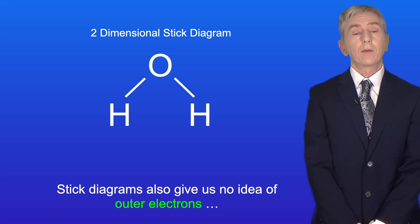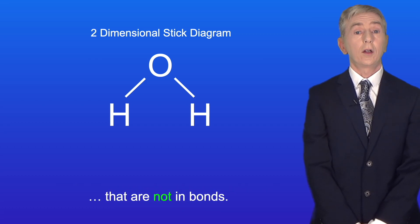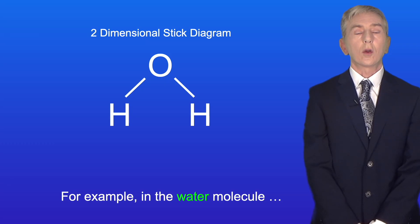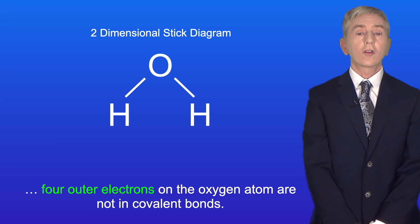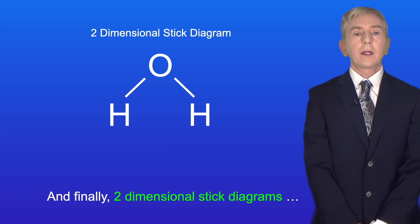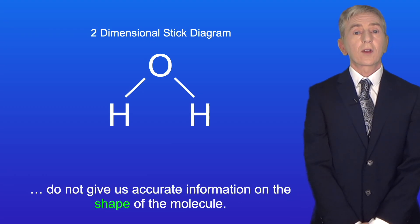Stick diagrams also give us no idea of outer electrons that are not in bonds. For example, in the water molecule four outer electrons on the oxygen atom are not in covalent bonds. And finally, two-dimensional stick diagrams do not give us accurate information on the shape of the molecule.